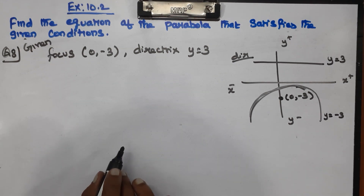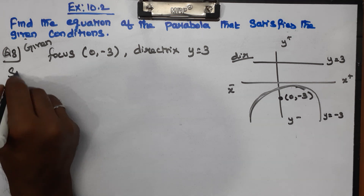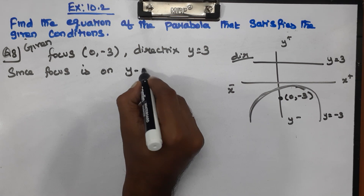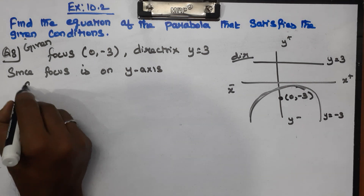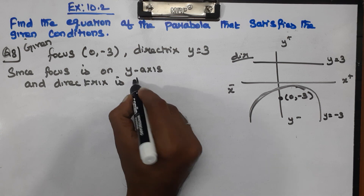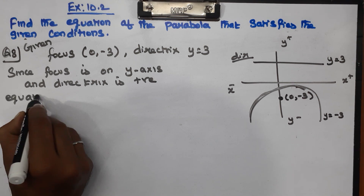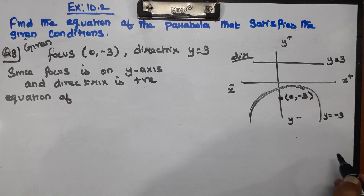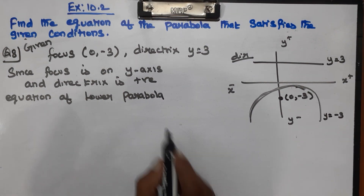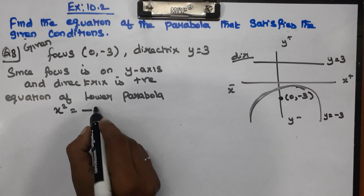The name is very important. Since focus is on the y-axis, and the directrix is positive, therefore the equation is that of a lower parabola. The lower parabola equation is x² = -4ay.